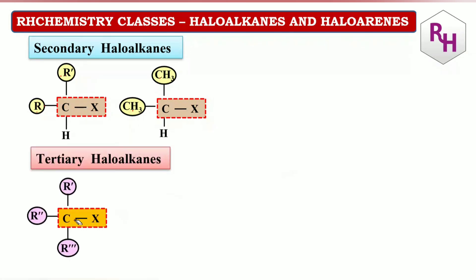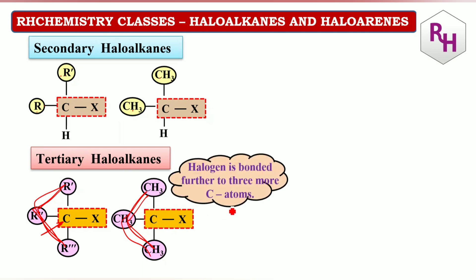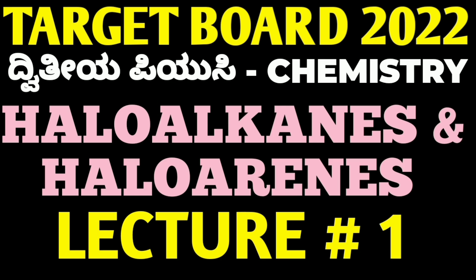Tertiary: one carbon surrounded by three more carbons. For example, CX with three R groups — this is called tertiary haloalkane. Halogen bonded to carbon further bonded to three more carbon atoms is called tertiary. So this is about primary, secondary, and tertiary haloalkanes. This is about today's class.